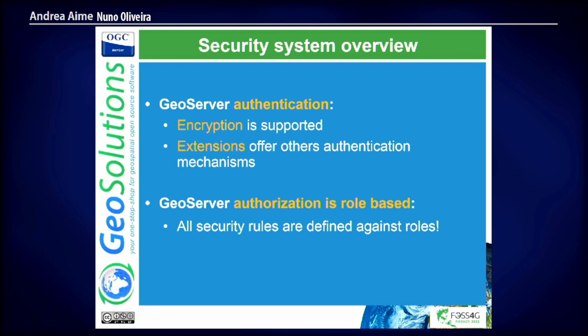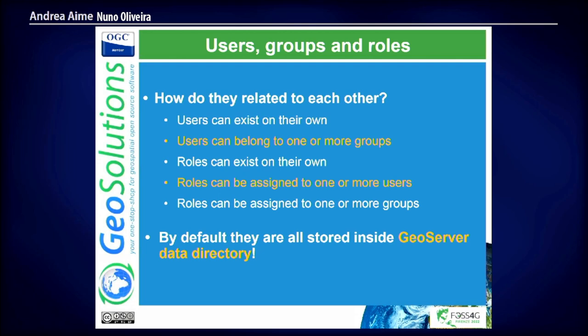How do they relate to each other? We have users — users exist on their own. A user may belong to a group. We have roles that can exist on their own, and users or groups of users are assigned to roles. By default, all of this is stored inside your GeoServer data directory. This is the vanilla GeoServer. So you have authorization, you have authentication — everything is stored inside your data directory. Authentication: user name and user password. Authorization: based on roles. And you can have it for data, services, and workspaces.